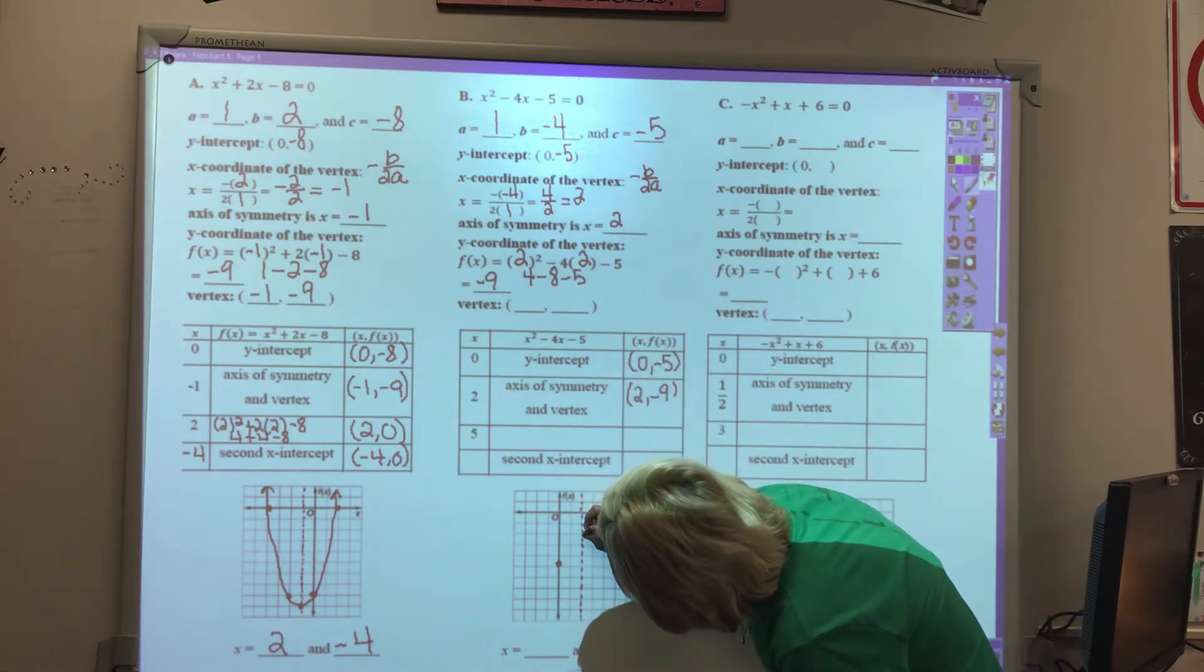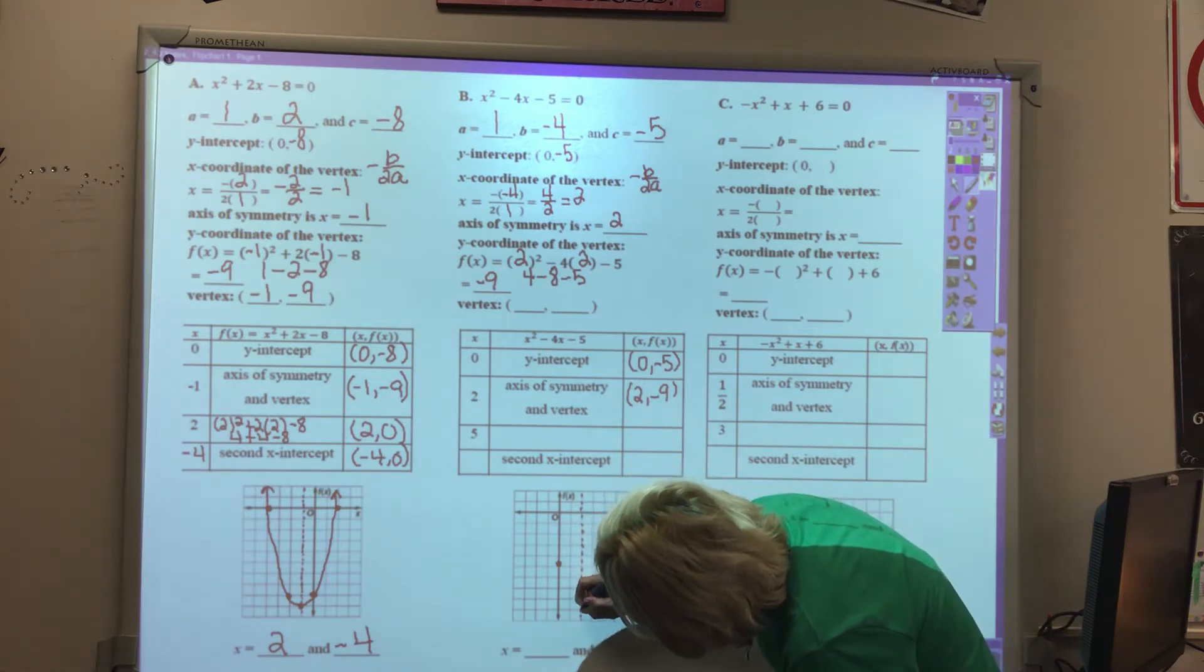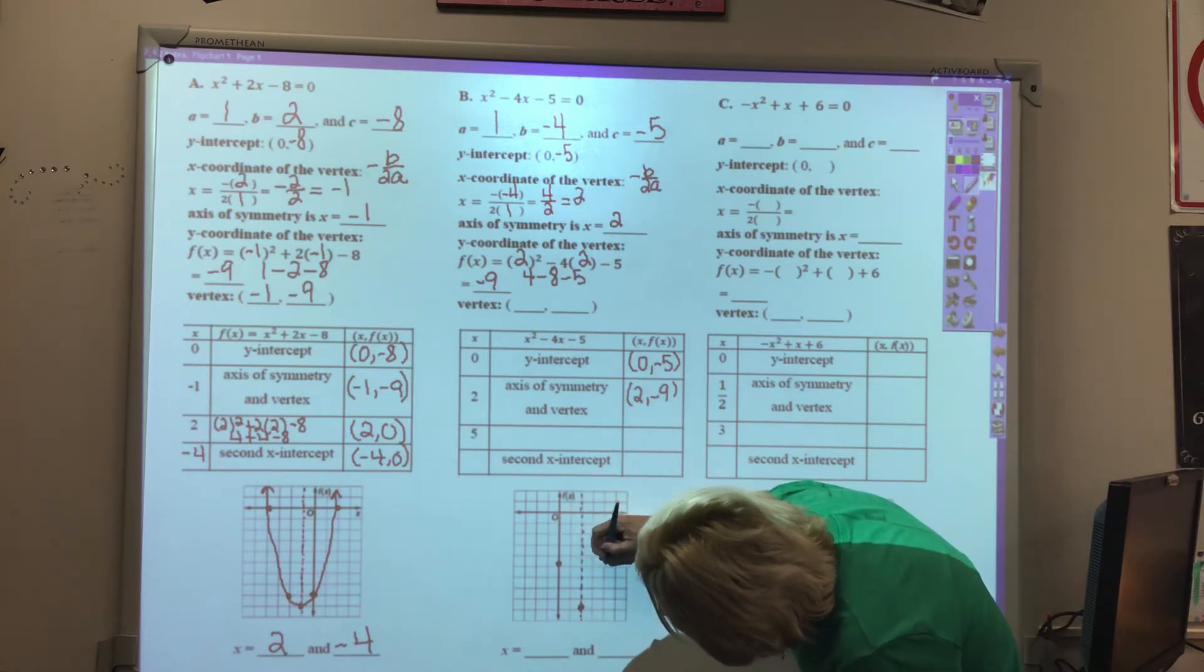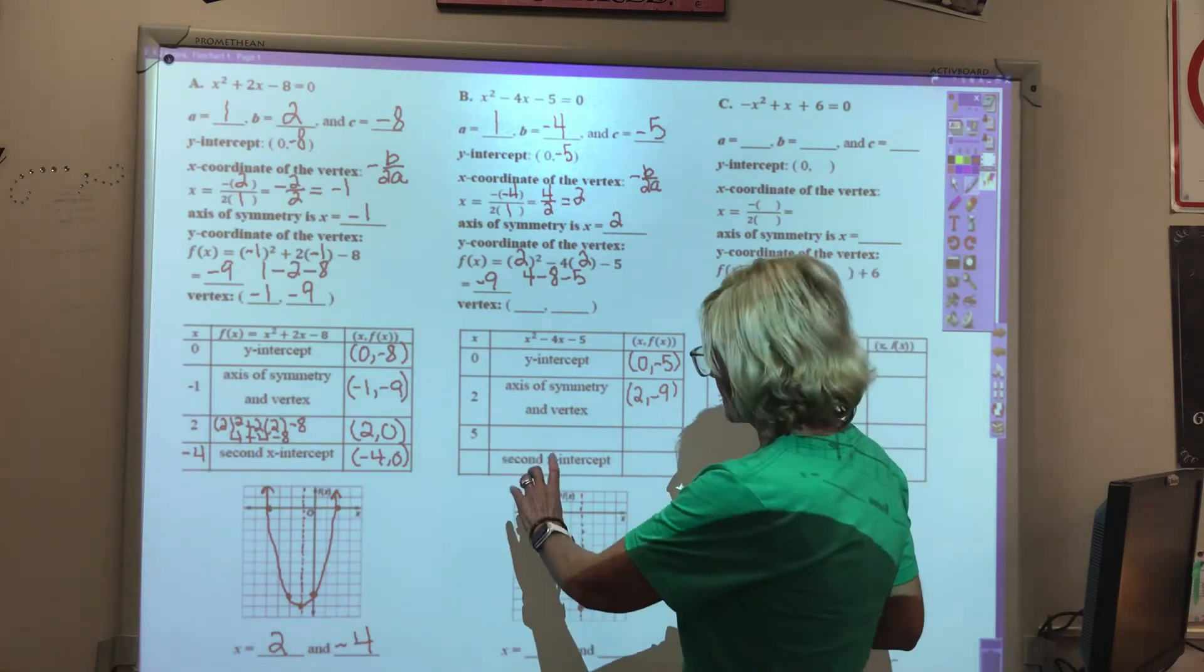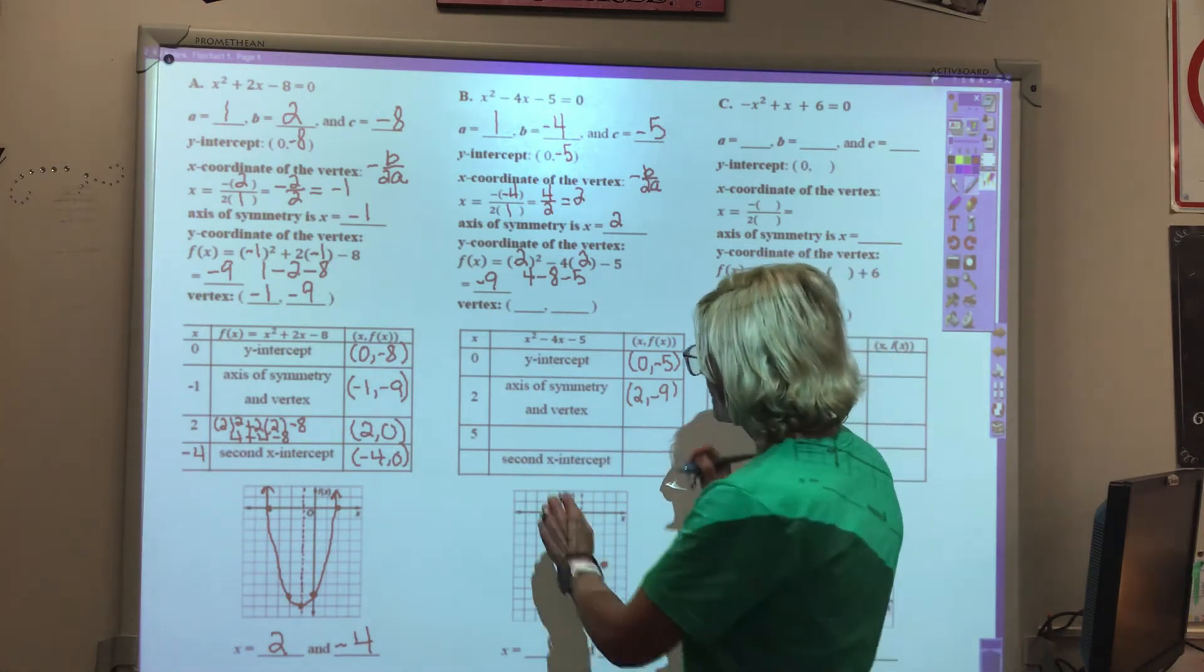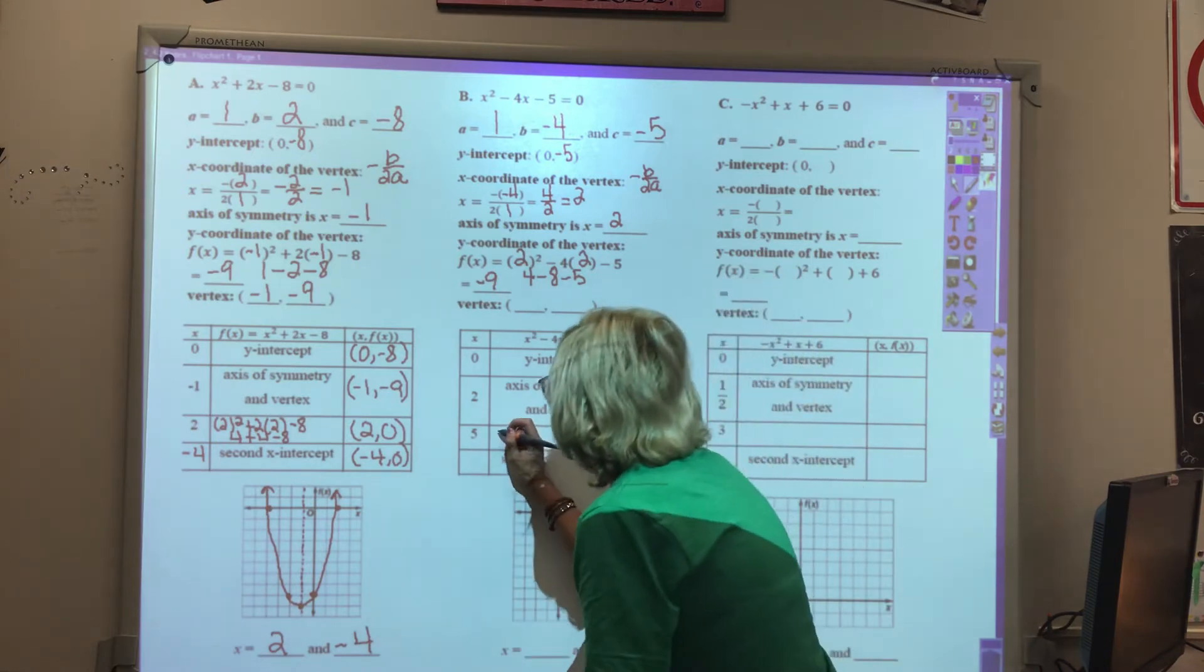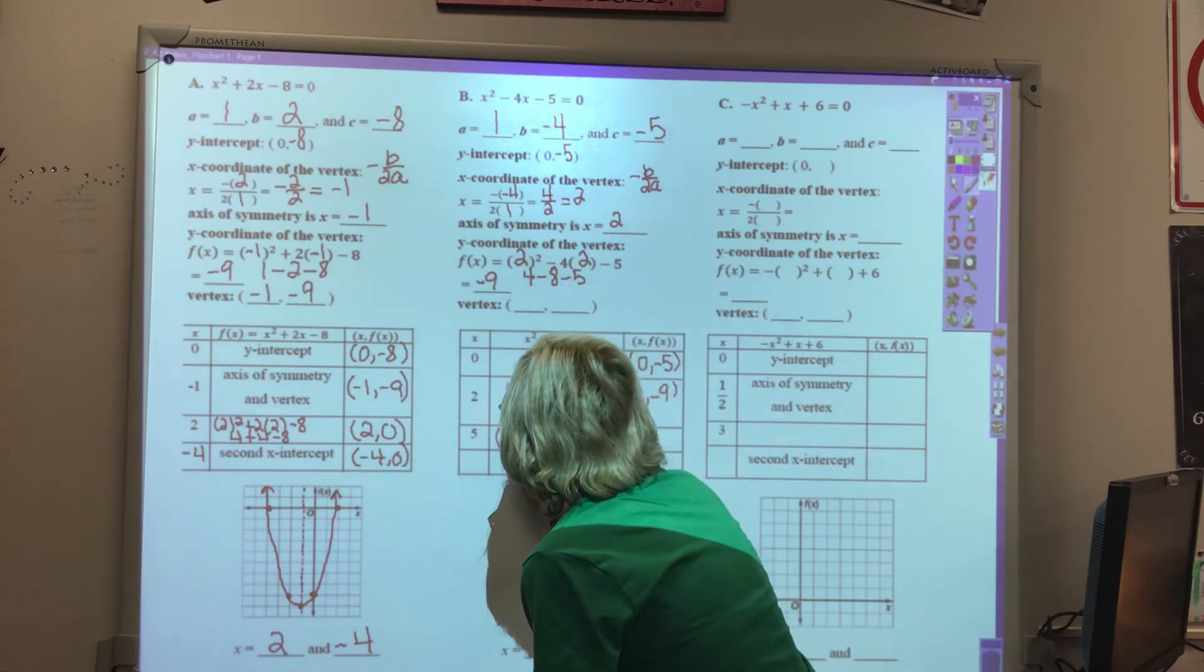Plotting the vertex at 2, negative 9. I should mention that we would have another point right here. One of our zeros, which is a solution, is at 5.